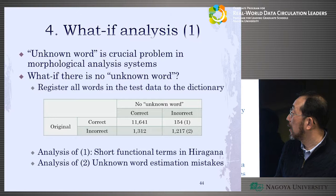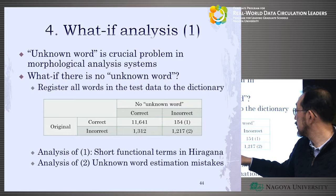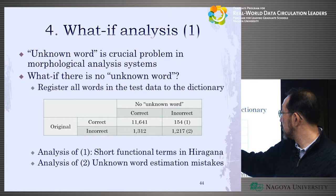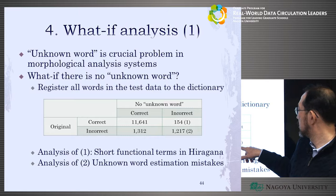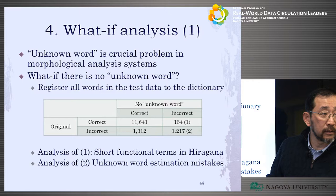They did this experiment. The original system has unknown words, and the correctly segmented/tokenized results were 11,154. With errors at around 20% — possibly from difficult sources like Twitter. Then, they created a new system with no unknown words by registering all words into the dictionary.